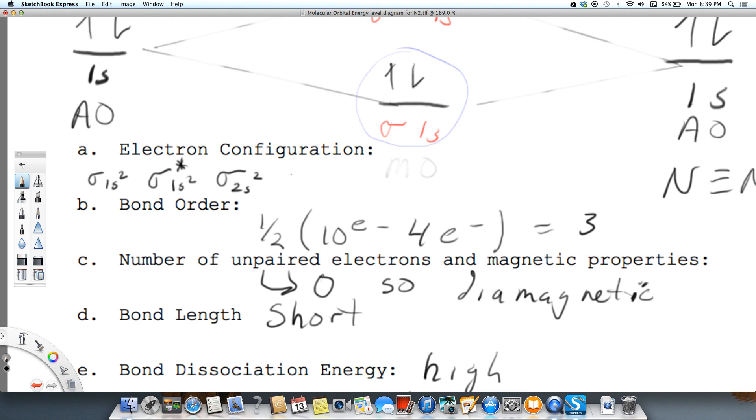Again, we're just going in order of the energy. And then we have sigma star 2s2, and then we go up to the pi,